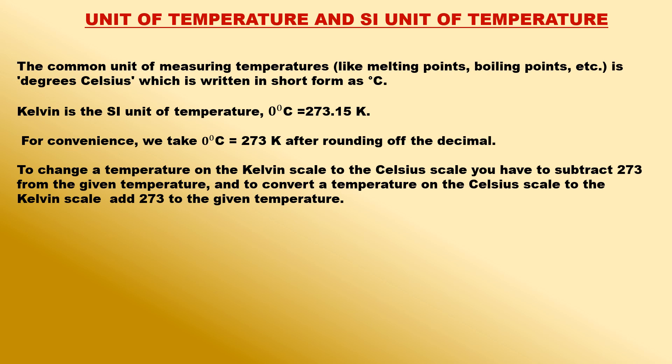There is another scale of temperature called the Kelvin scale of temperature, which is used by scientists mainly for research work. The SI unit of measuring temperature is kelvin, denoted by the symbol K. The melting point of ice on the Kelvin scale is 273 K and the boiling point of water on the Kelvin scale is 373 K. The relation between Kelvin scale and Celsius scale of temperature can be written as: temperature on Kelvin scale = temperature on Celsius scale + 273.